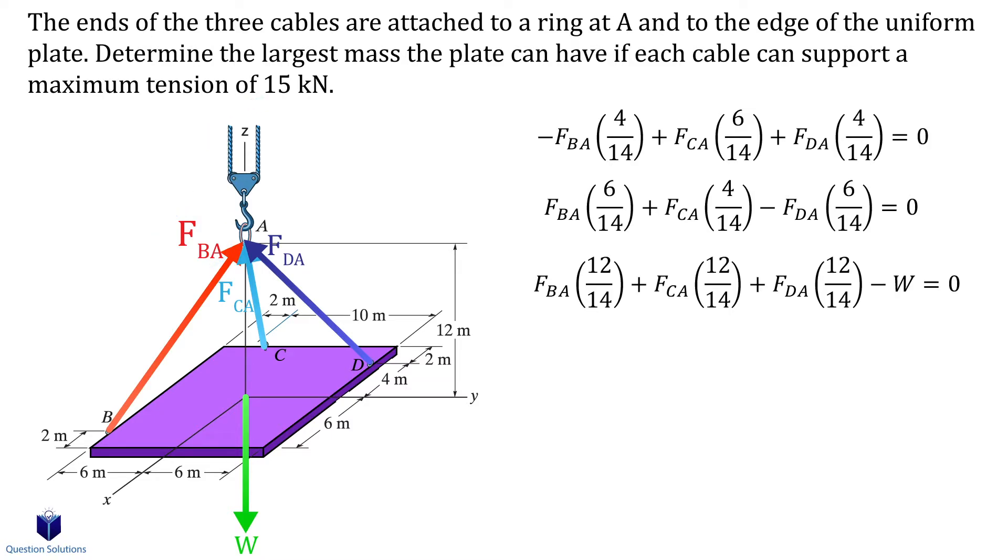If we do that we need to check to see if the other cables are less than or equal to 15 kilonewtons. If they go over then cable AB can't be 15 kilonewtons. Let's assume cable AB is 15 kilonewtons and solve the equations. We get the following values. This tells us that cable CA carries no force and cable DA also carries the maximum it can, so all the conditions we require are met.